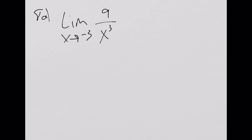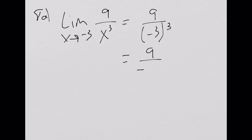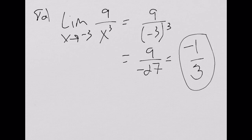So I'm just going to go ahead and do that. I get 9 over negative 3 cubed, and that simplifies to 9 over negative 27, which simplifies to negative 1 over 3. And we're done.